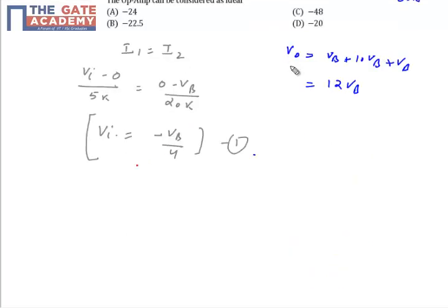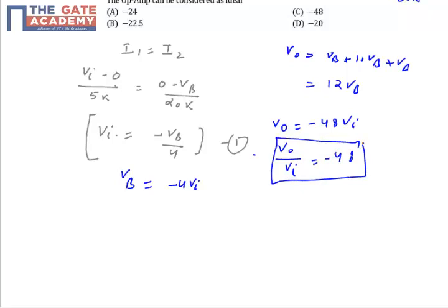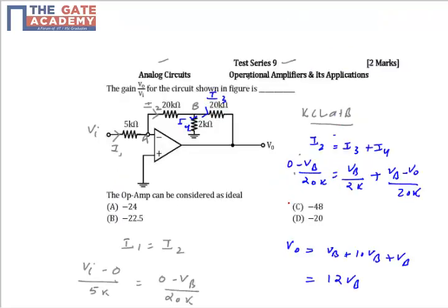Then VV is what? VV is basically from this equation number 1, you know that VV is nothing but 4 times VI. Let's put it here and you will get the values as V0 is equal to minus 48VI and V0 by VI is equal to minus 48. So friend, from this expression we know that our voltage gain for this op-amp circuit is minus 48. So my answer will be minus 48. Thank you.